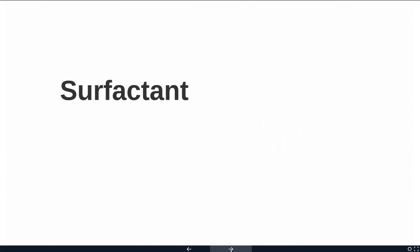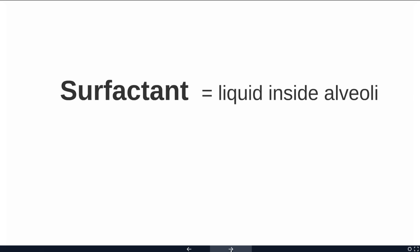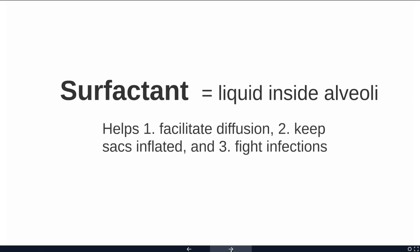Something we find inside the alveoli is called surfactant. This is a liquid inside the alveoli and it's going to do a couple of things. First, it's going to help facilitate diffusion — similar to how water molecules bump into other molecules and help move them around, surfactant helps speed up diffusion inside the lungs.